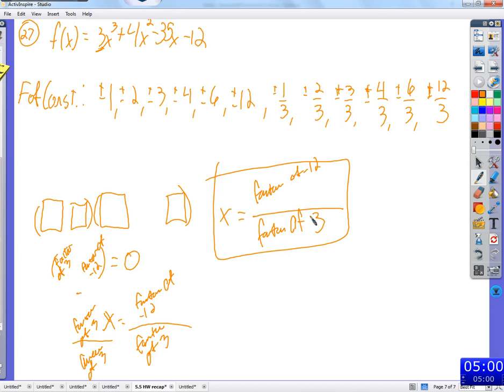All I'm trying to do is help you understand why the list of zeros will be a factor of the constant over the factor of the leading coefficient.